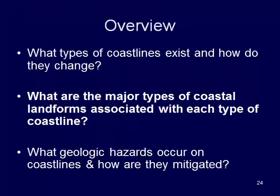To wrap things up, we looked at major types of coastal landforms associated with emergent, submergent, and stable environments. We'll sign off from this video and come back to talk about some of the hazards that exist on coastlines as well as how they are mitigated.